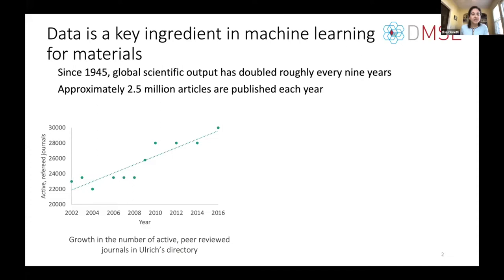On the left-hand side, we see growth in the number of active peer-reviewed journals as one metric of exponential increase in content. A recent review paper by the Seder group looked at the number of publications appearing every year in different fields of material science, shown on the right-hand side. This is through manual query of Web of Science publications, broken down by application of those materials from research articles, communications, letters, and conference proceedings. The bottom reflects whether information is in HTML, XML, or PDF format.